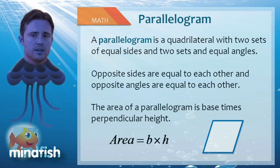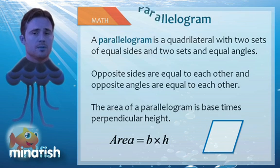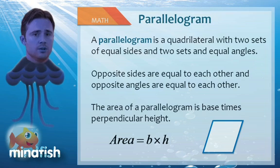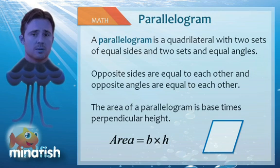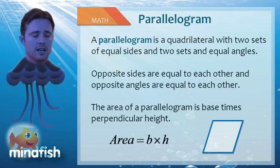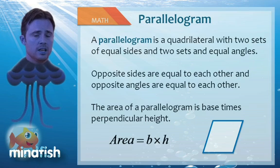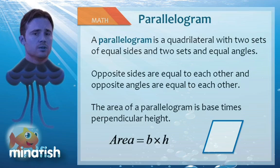The next type of quadrilateral I'd like you to be familiar with is the parallelogram. The parallelogram has two sets of parallel sides, and its area is defined as the base times the perpendicular height. Solving for angles in a parallelogram, you're going to have two sets of equal angles, and so you can use the alternate angle rules to solve for missing angles.